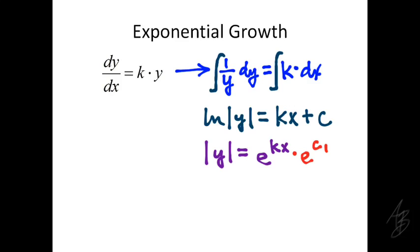I refer to this as c1 because it's a little bit of a different constant. It's actually the same c but we're using it a different way, so we'll denote that with that 1 there. To get y by itself we have to get rid of these absolute values.